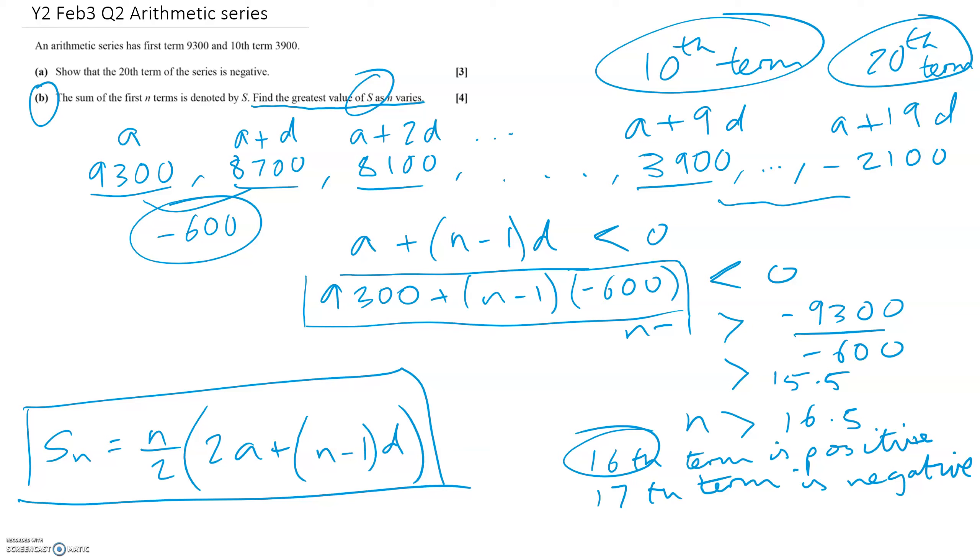So if we put that into this formula that we wrote down before, we know we want n equals 16. We're going to substitute in here. We know what a is, we know what d is. So we can just write in our values: 16 over 2, we want the sum of the first 16 terms. That's going to be 2 times by 9,300 plus 16 minus 1 times by minus 600. And if you type that into your calculator, you should get 76,800, which would be the maximum value of s.